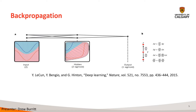Backpropagation is a practical application of the chain rule for derivatives. The equations on the right show how the chain rule can be used to relate two small changes: a change of x on y and of y on z. A small change in x, delta x, is transformed to a change in y, delta y, by multiplying by the partial derivative dy/dx. Similarly, delta y is then related to the change in z, delta z. This shows us how delta x is related to delta z through the multiplication of dy/dx and dz/dy. This also works when x, y, and z are vectors and the derivatives are Jacobian matrices.